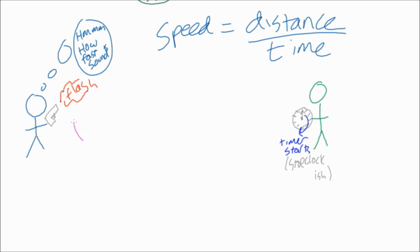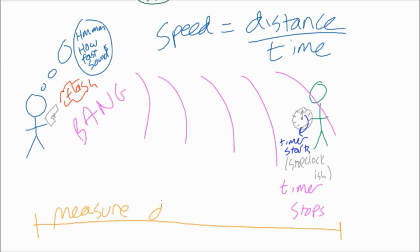So just to recap in this experiment: gun fires, this person with a stopwatch sees a flash, starts timer, waits till they hear the bang, stops the timer, measure the distance, speed equals distance over time.